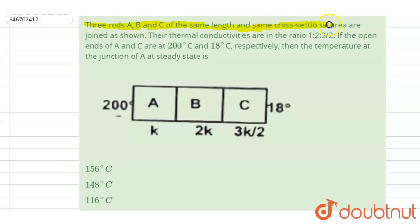Three rods A, B, C of same length and same cross-section area are joined as shown. Their thermal conductivity are in ratio of 1:2:3/2. If the open end of A and C are at 200 degrees Celsius and 18 degrees Celsius respectively, then find temperature at the junction of A at the steady state.